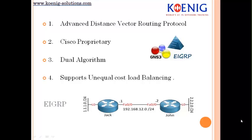The problem with IGRP was that it was very slow to converge. Now we have EIGRP which is faster to converge, and it has all the possible features of a distance vector routing protocol and a link state routing protocol. A distance vector routing protocol is a protocol in which a router will only know what their neighbors have told them.